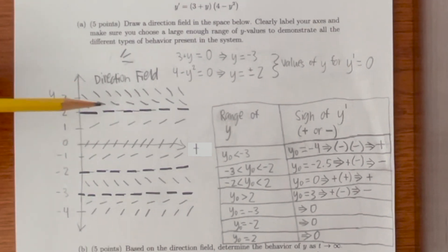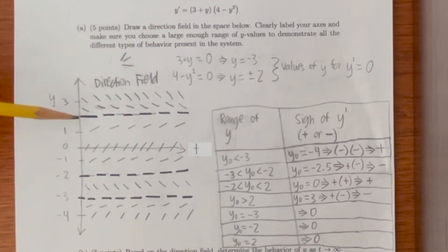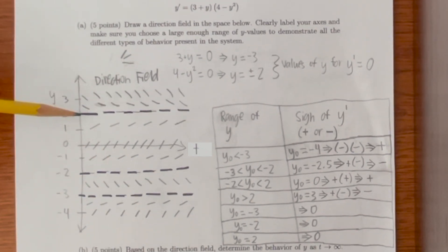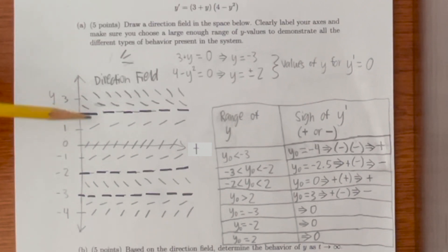And there you go. Here's our completed direction field. And I just went over the values for which y prime is equal to 0 with a sharpie just to allow it to stand out a little more.